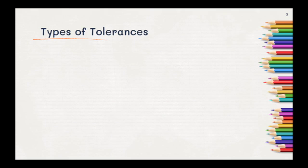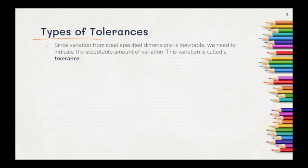Let's start by taking a look at the types of tolerances. Since variation from ideal specified dimensions is inevitable, we need to indicate the acceptable amount of variation. We know that when a part is manufactured, it isn't going to be perfect, so we need to figure out how much we can allow it to not be perfect. This variation is called a tolerance.